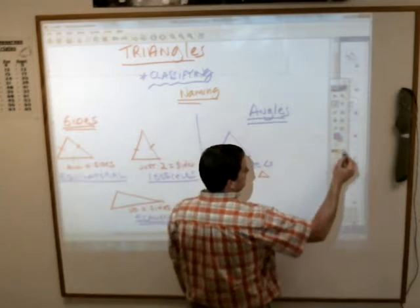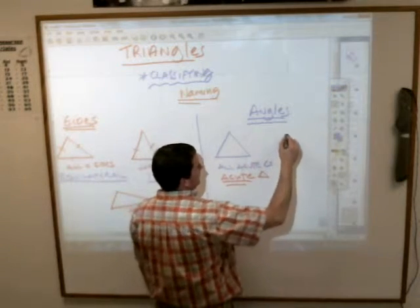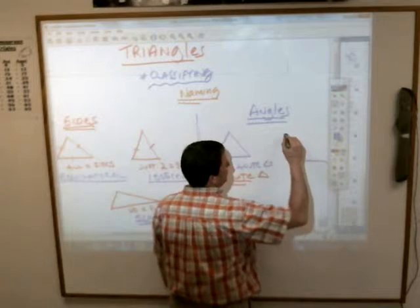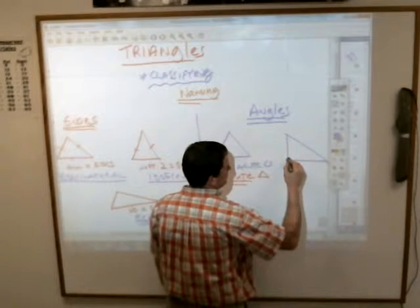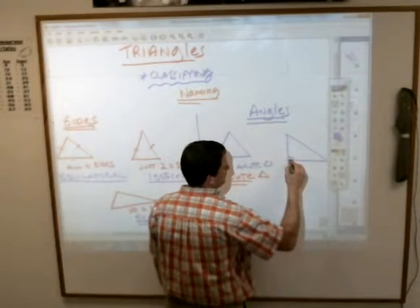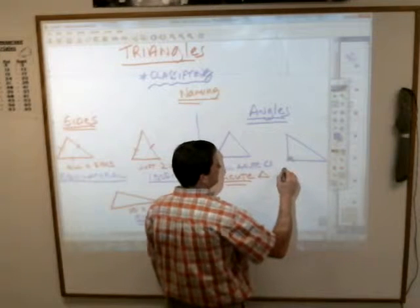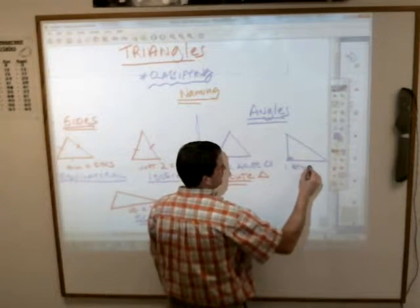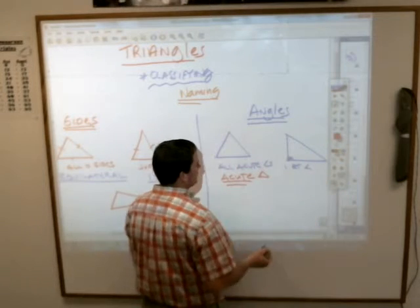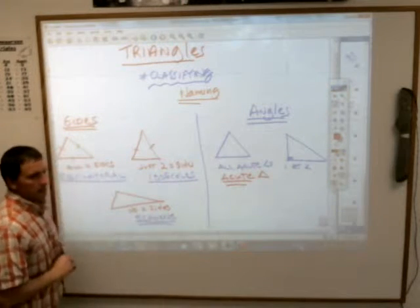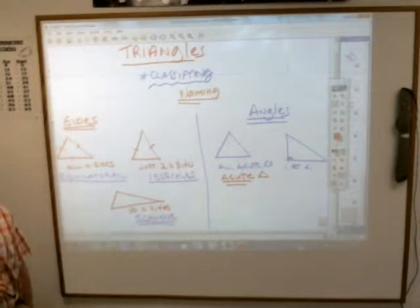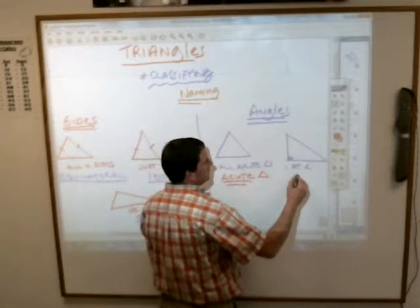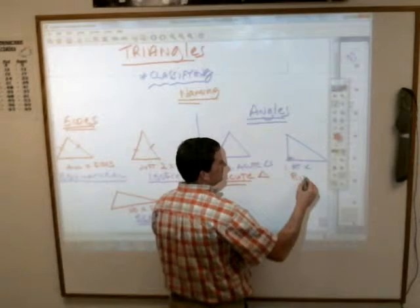Or, you have a triangle that has one right angle in it. In which case that triangle is called a — again, pretty tough call on that. Alex? It's a right triangle. It is the right triangle.